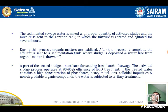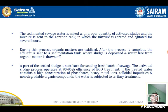The sedimented sewage water is mixed with a proper quantity of activated sludge and sent to the aeration tank where it is aerated and agitated for several hours. The organic matter is oxidized. After the process is complete, the effluent is sent to a sedimentation tank where sludge is deposited and water free from organic matter is drawn off. Part of the settled sludge is sent back for seeding fresh batches. The activated sludge process operates at 90 to 95 percent efficiency for BOD treatment.